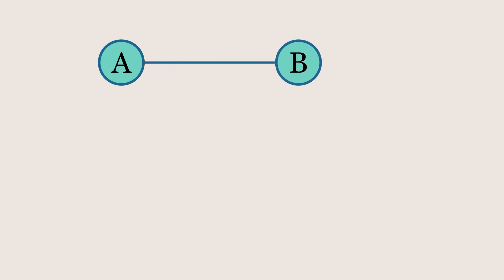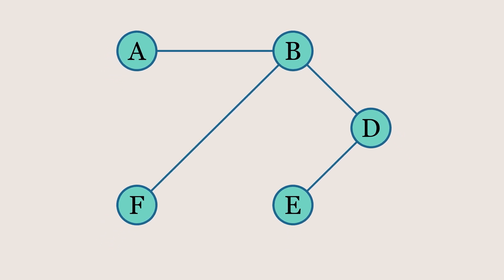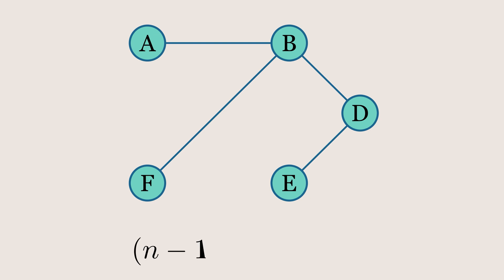Let's explore how many minimum edges are required to keep a graph connected in the undirected case. Starting with one node — this is considered connected on its own. If we add a second node, we need to connect them with an edge. Adding a third node requires another edge, and so on. The minimum number of edges needed to keep a graph connected is always one less than the number of nodes, so for a graph with n nodes, the minimum number of edges required is n-1.